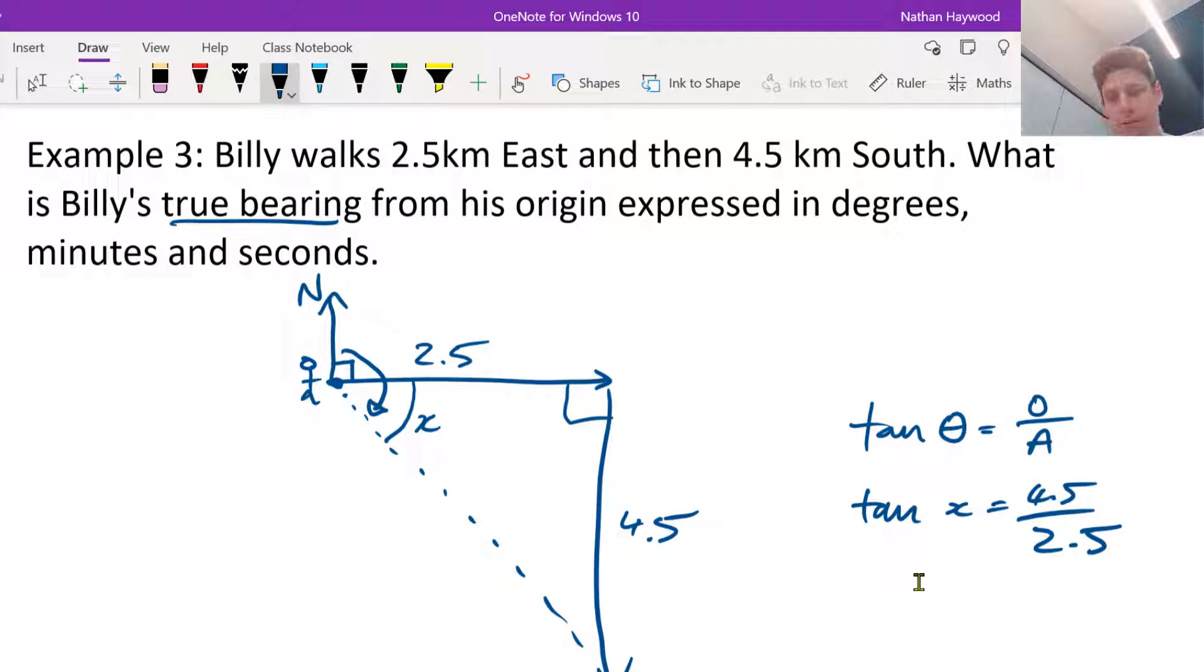You all did this? And then how do we get tan to the other side? Tan negative 1. Very good. You type it into your calculator.